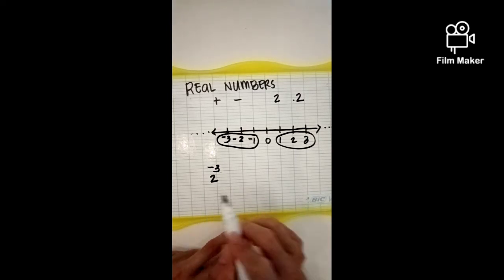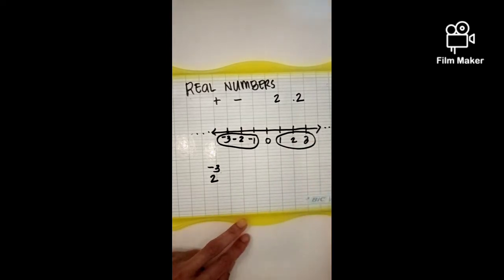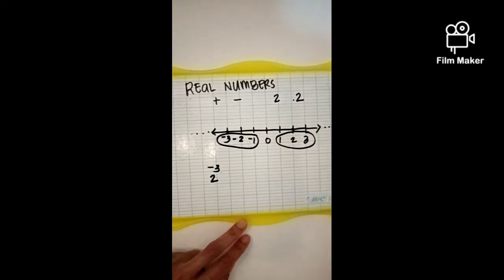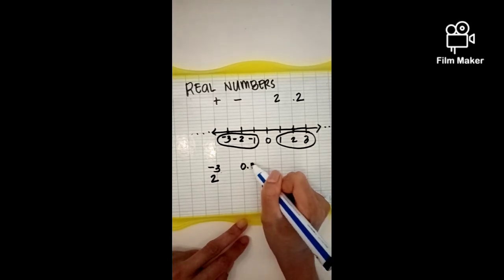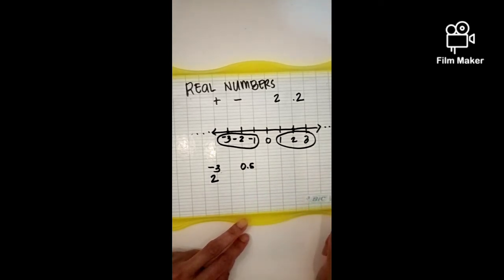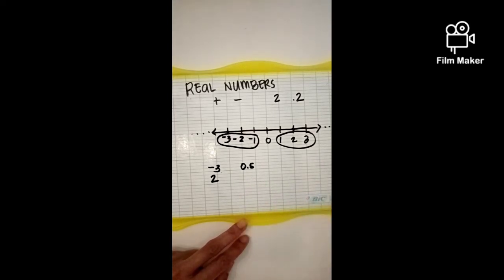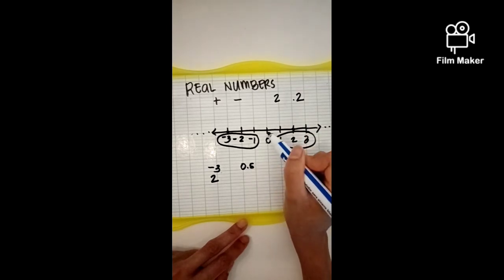Yes, you are right. Two is a real number also, because you can find it on the number line. You can consider 0.5 as a real number, because you can find 0.5 in between zero and positive one.